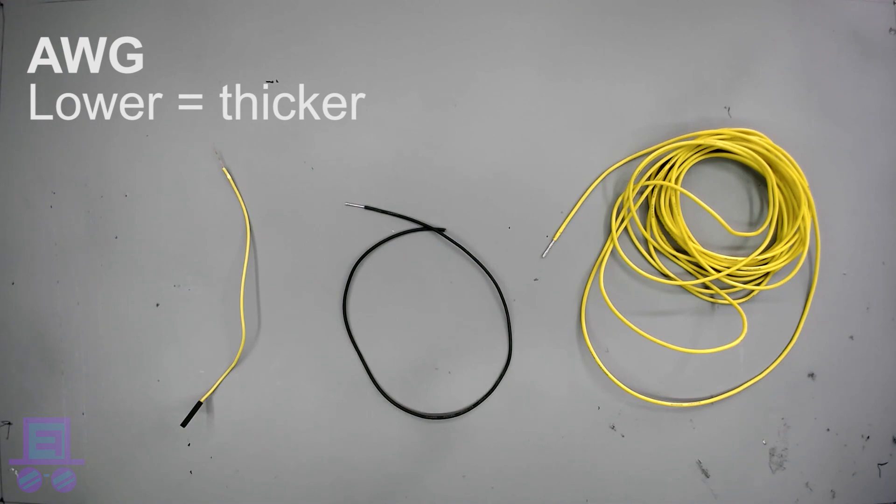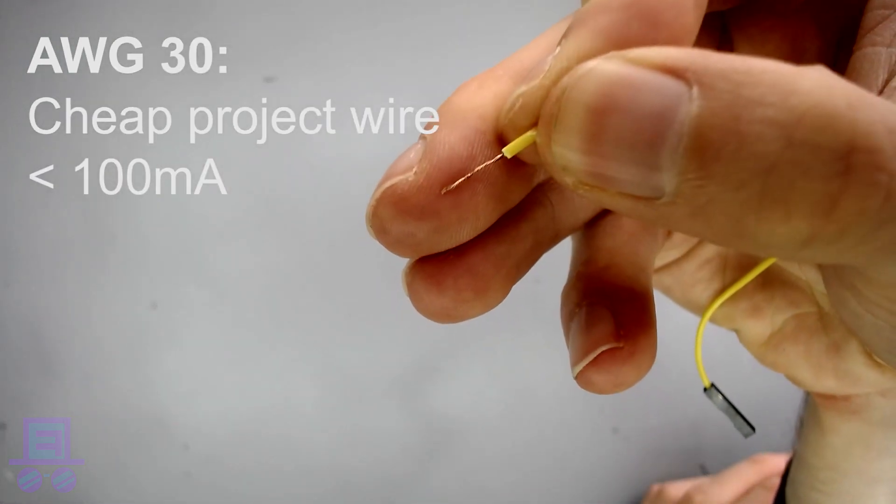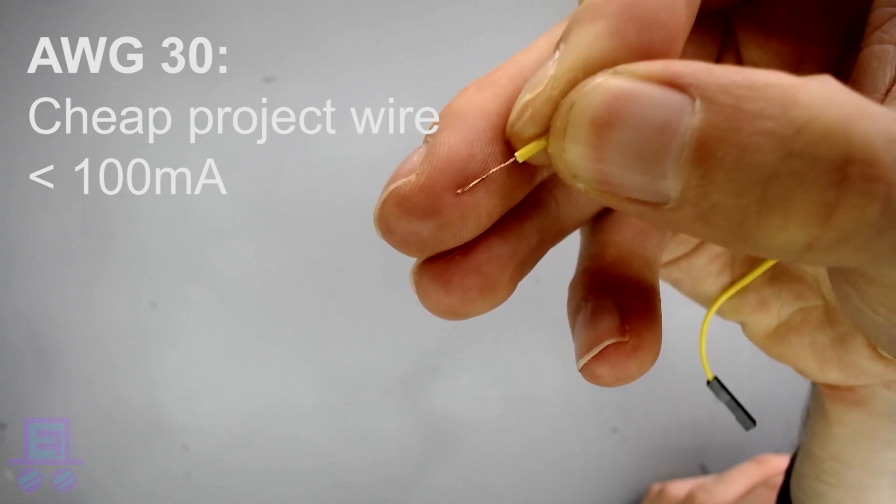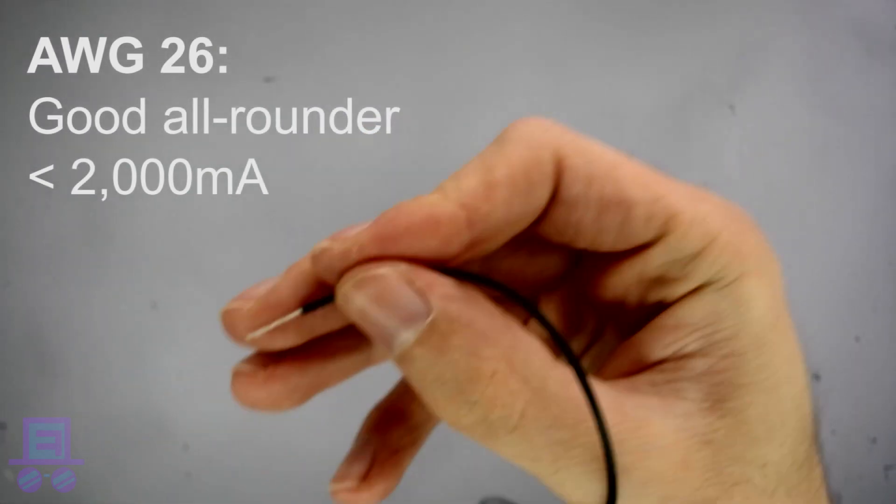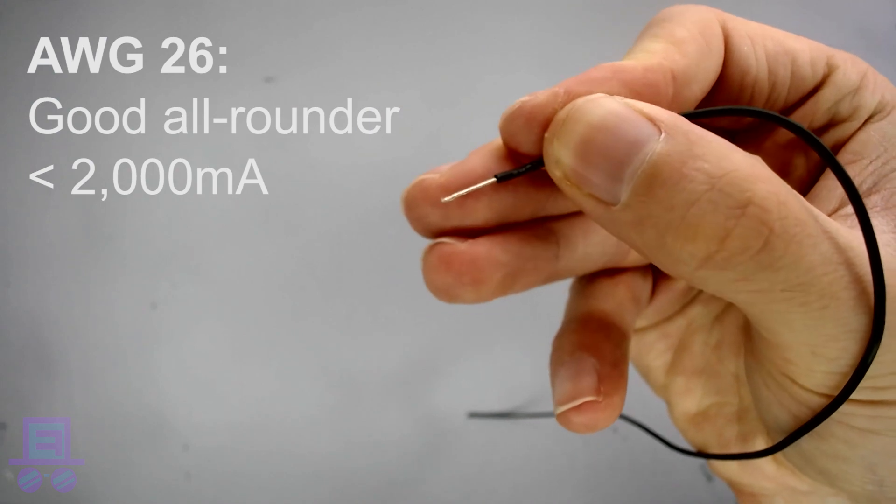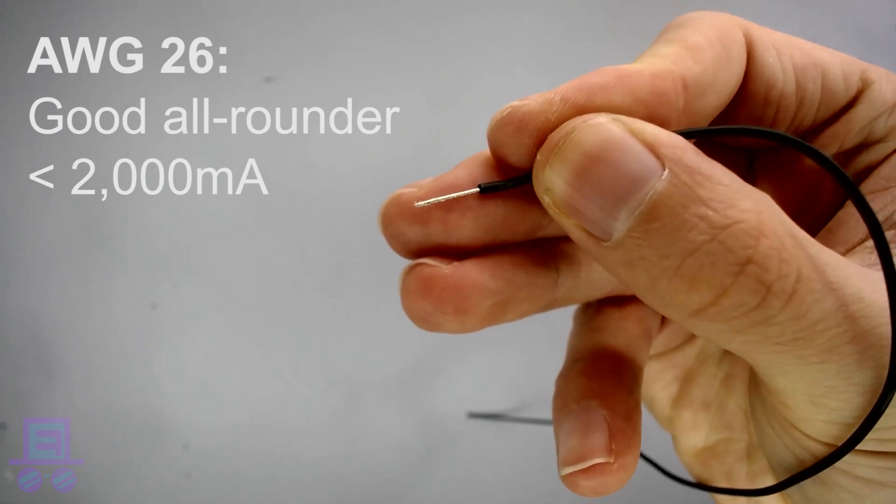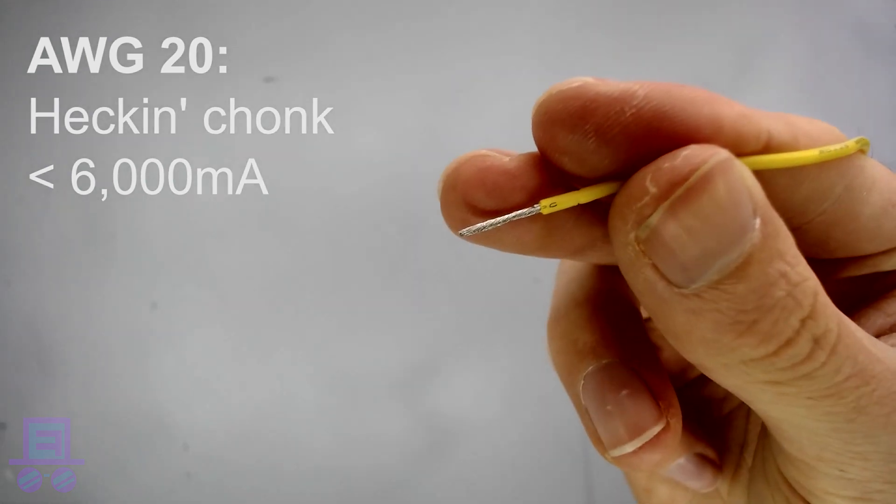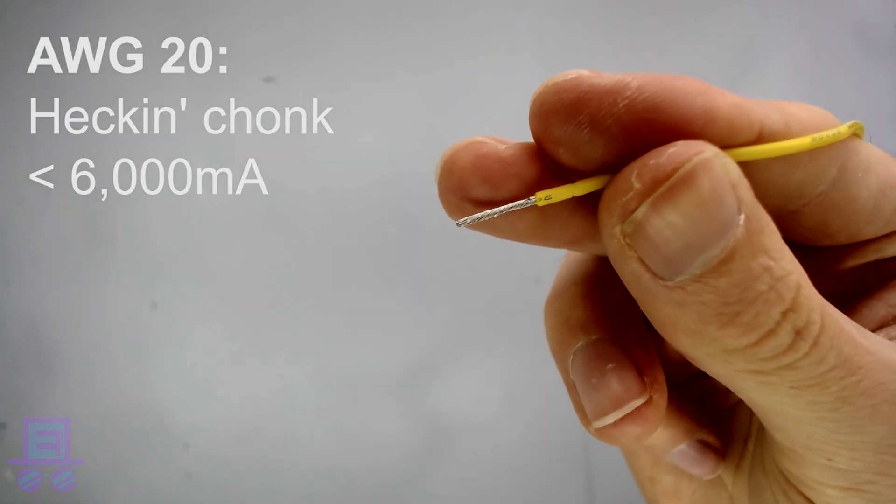For most projects, I would recommend AWG 30 for anything up to 100 milliamps. This is perfect for single LEDs and signal wires. AWG 26 for anything up to 2,000 milliamps, perfect for today's project. And AWG 20 for larger projects up to 6,000 milliamps. This is what I use in my glow suit.